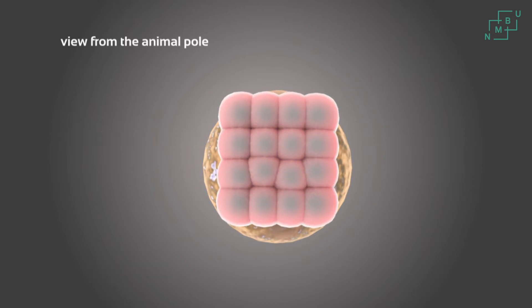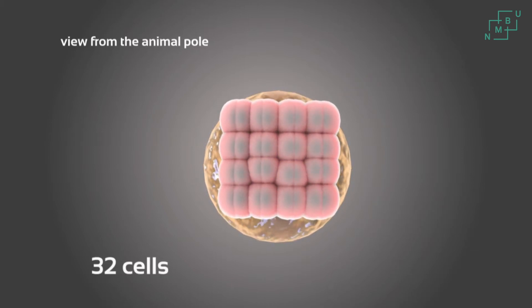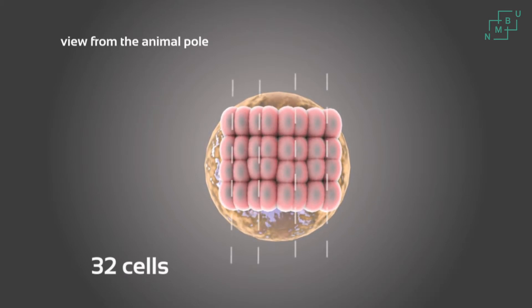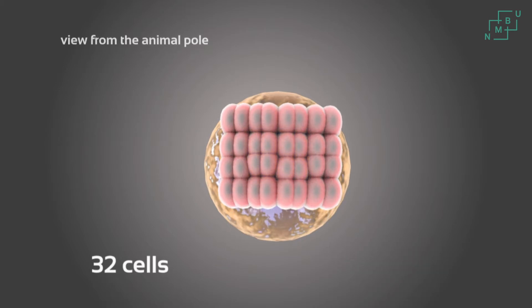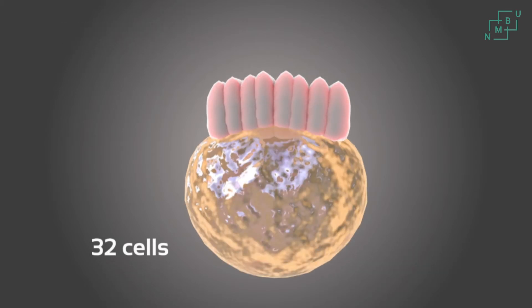The fifth division occurs in four planes at right angle to the fourth and parallel to the first and third. Seen from the face view, the 32 cells may appear as two tiers of cells because of the curvature of the blastodisc, but these cells are still a single 4x8 array of cells.